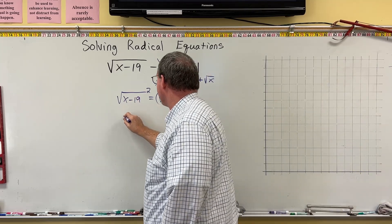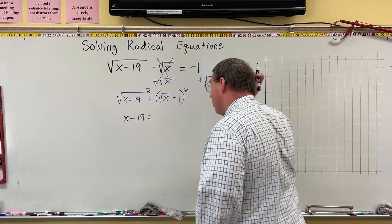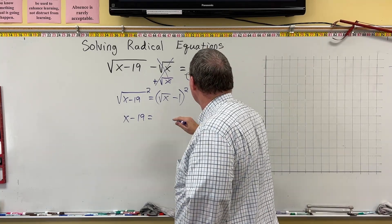When I square this side, it's just going to be x minus 19, because that's what's under the radical. But over here, this is going to be a little weird.